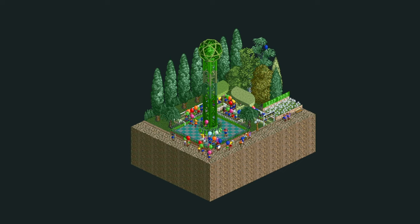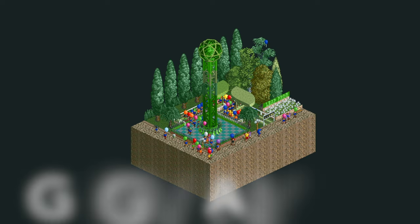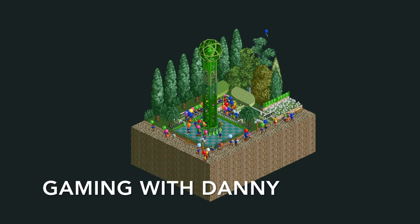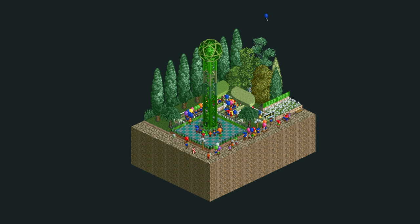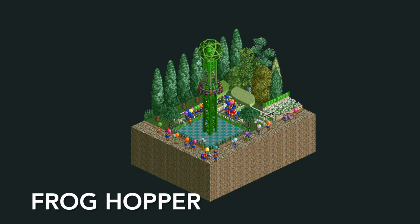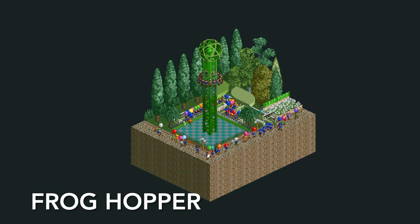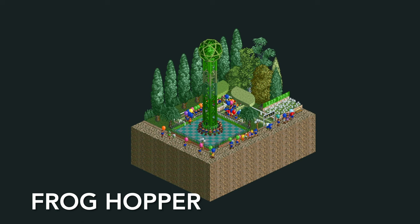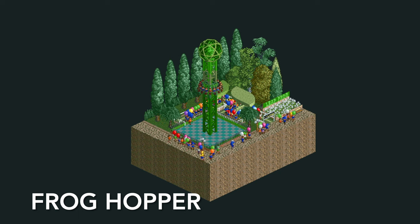Welcome to the first episode of the Gaming with Danny series. In these videos I'm going to show you some awesome rides you can create in Open RCT2, like this recreation of the Frog Hopper ride you might have seen in some amusement parks. It's normally a kiddie ride, and here in Open RCT2 I've recreated that bouncing motion in this little guy I call Leap Frog.